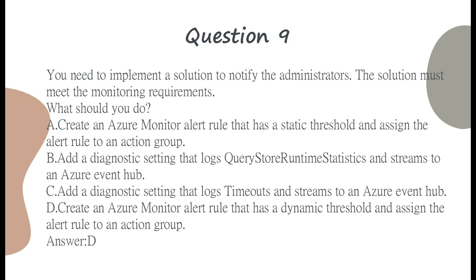Question 9. You need to implement a solution to notify the administrators. The solution must meet the monitoring requirements. What should you do? A. Create an Azure Monitor Alert Rule that has a static threshold and assign the alert rule to an action group. B. Add a diagnostic setting that logs query store runtime statistics and streams to an Azure Event Hub. C. Create an Azure Monitor Alert Rule that has a dynamic threshold and assign the alert rule to an action group. Answer: C.